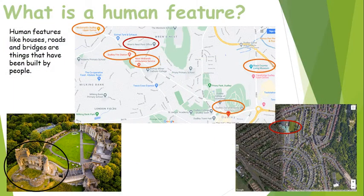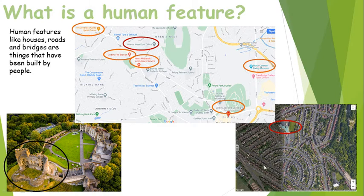So what is a human feature? Human features like houses, roads and bridges are things that have been built by people. Now if you remember last week we looked at the ruins of Dudley Castle, and that is definitely a human feature in our locality. And here is an aerial photograph of our immediate area — there's all the Crescents — and you can see our school with its lovely light green roofs.